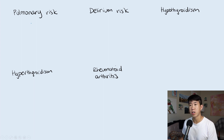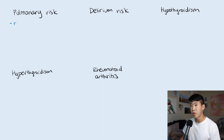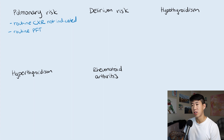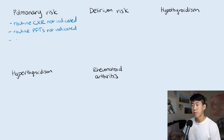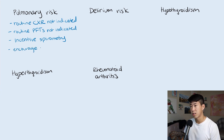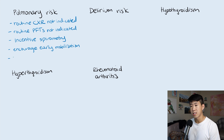Many patients going into surgery have pre-existing lung disease and we need to optimize them. Make sure they're not having an active COPD or asthma exacerbation — if they are, give duonebs and treat them first. Routine chest X-rays and PFTs are not indicated, except for lung volume reduction or intrathoracic surgeries, or if a COPD or asthma patient's baseline is unclear. Post-surgically, ensure all patients do incentive spirometry and encourage early mobilization. For post-op hypoxemia consults, check volume status and signs of DVT or PE.